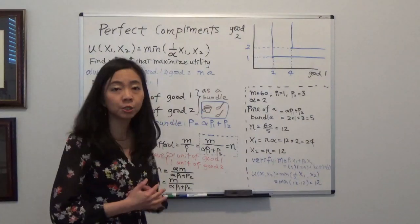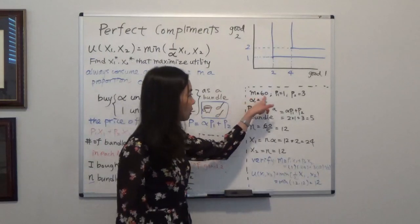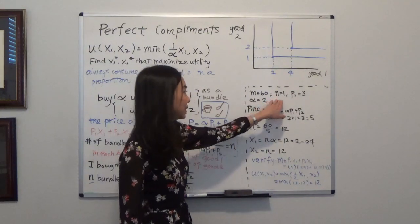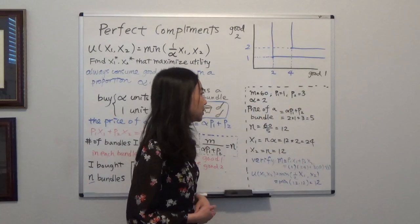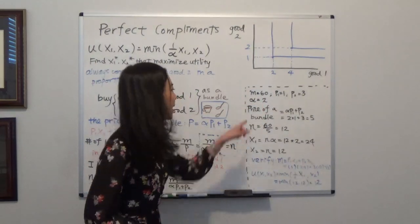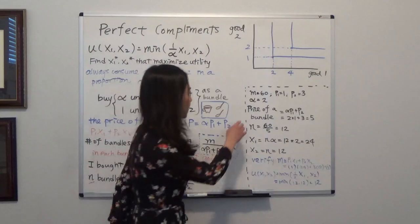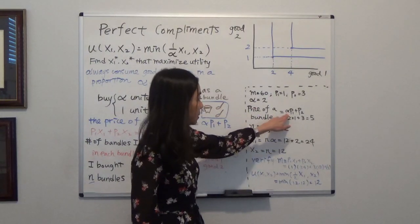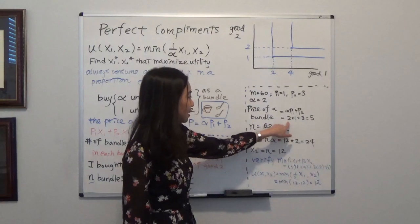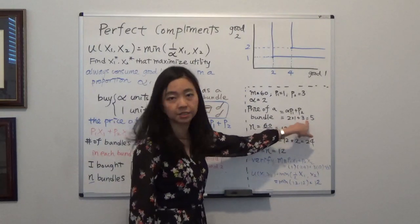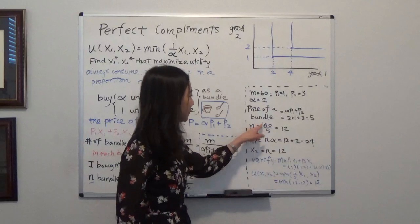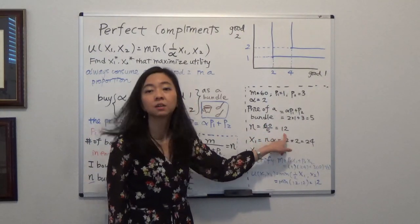Now we're going to look at an example. Suppose my budget for coffee is $60 per month, the price of a spoon of sugar is $1, and the price of a cup of coffee is $3. And I always add 2 spoons of sugar into my coffee, so my alpha is equal to 2. The price of the bundle will be 2 spoons times $1 plus $3, which equals $5. So how many bundles can I purchase? That will be my budget divided by the price of the bundle, so I can purchase 12 bundles.